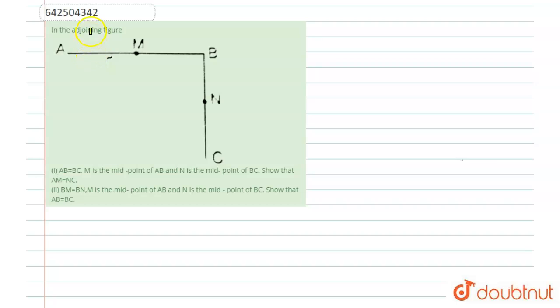Hello everyone, let's see the question. The question says in the given figure, AB is equal to BC, M is the midpoint of AB, N is the midpoint of BC, so that AM is equal to NC.